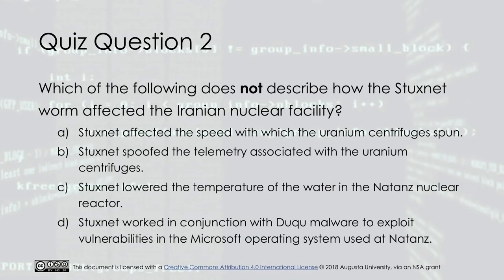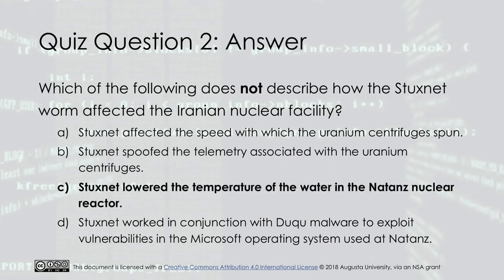Which of the following does NOT describe how the Stuxnet worm affected the Iranian nuclear facility? A: Stuxnet affected the speed with which the uranium centrifuges spun. B: Stuxnet spoofed the telemetry associated with the uranium centrifuges. C: Stuxnet lowered the temperature of the water in the Natanz nuclear reactor. D: Stuxnet worked in conjunction with the Duqu malware to exploit vulnerabilities in the Microsoft operating system used at Natanz. The answer is C — Stuxnet lowered the temperature of the water in the Natanz nuclear reactor.